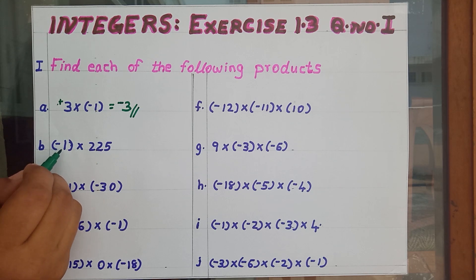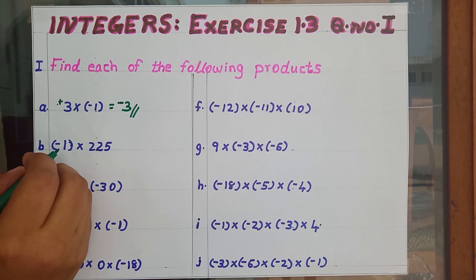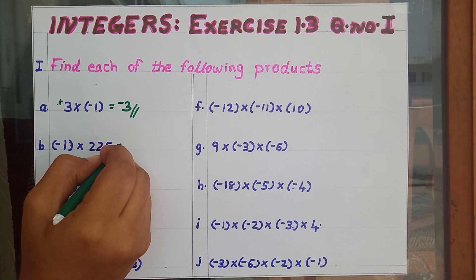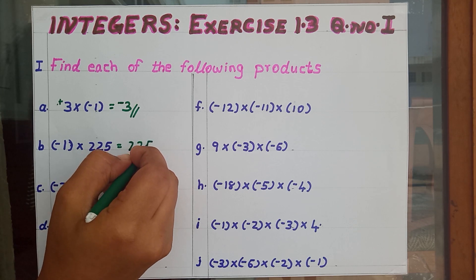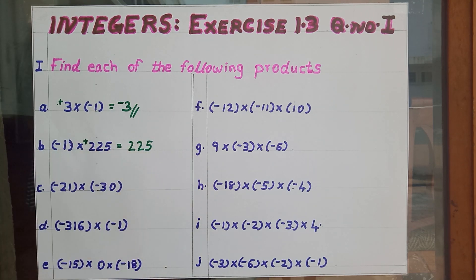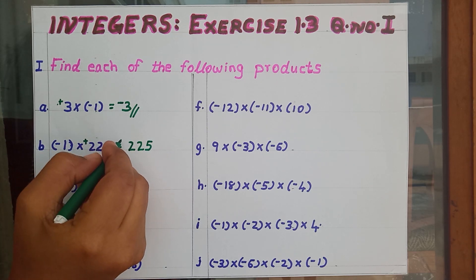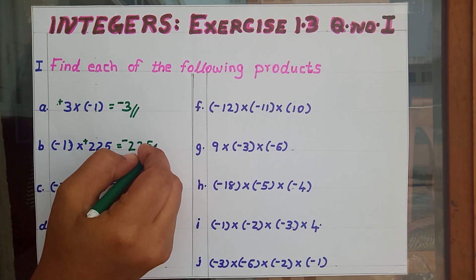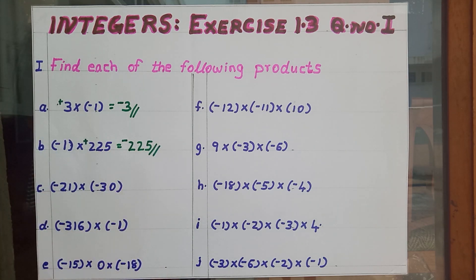Second one: negative 1 into 225. First find 1 into 225. What will be the answer? 225. Then here comes a positive sign — minus into plus gives minus. So we should be thorough with the rules for multiplication of integers. Then only we can do all these problems.